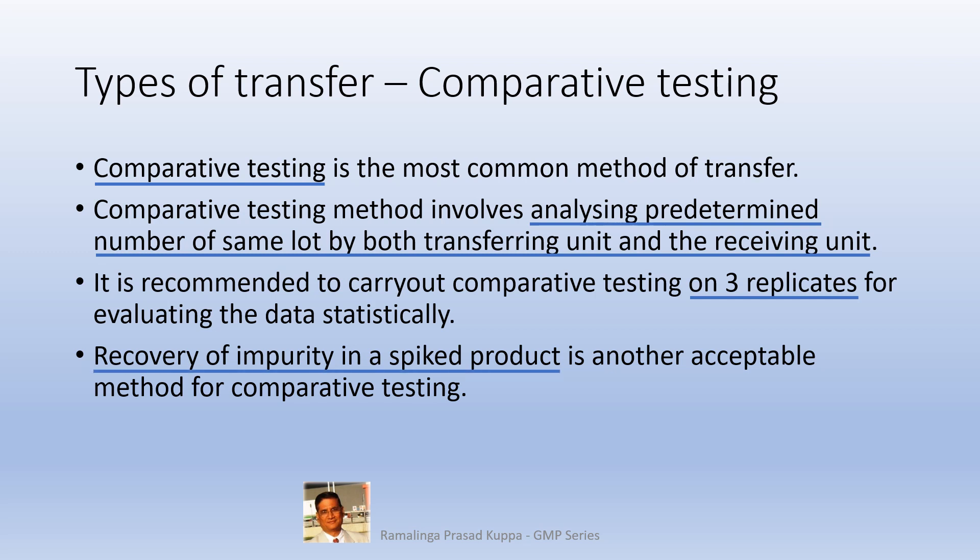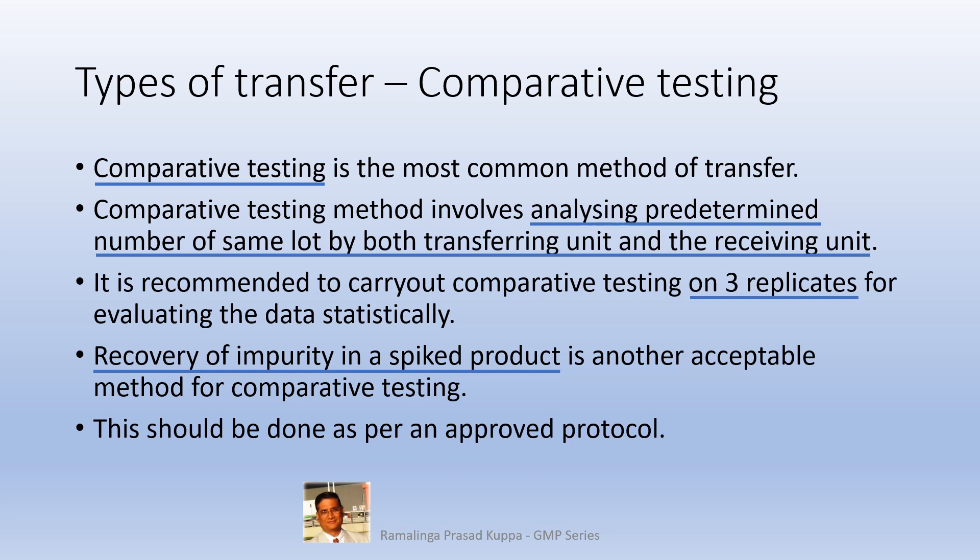Recovery of impurity in a spiked product is another acceptable method for comparative testing. A known concentration of an impurity is spiked into the sample by the transferring unit, and the spiked sample is analyzed at the receiving unit. Recovery means how much percentage of the added impurity is determined. The recovery should be around 99 percent or more, though the recovery percentage varies depending upon the capability of the analytical method. Estimation of statistical variability should also be part of the acceptance criteria, and all these aspects should be addressed in an approved protocol.